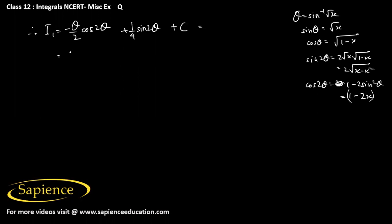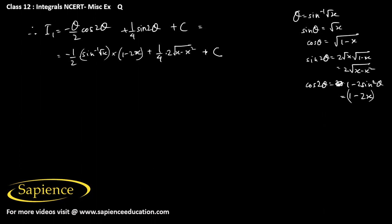So this integral I1 will be: minus 1 by 2 into sin inverse root x into cos 2 theta which is 1 minus 2x, plus 1 by 4 into sin 2 theta which is 2 into root over x minus x squared.